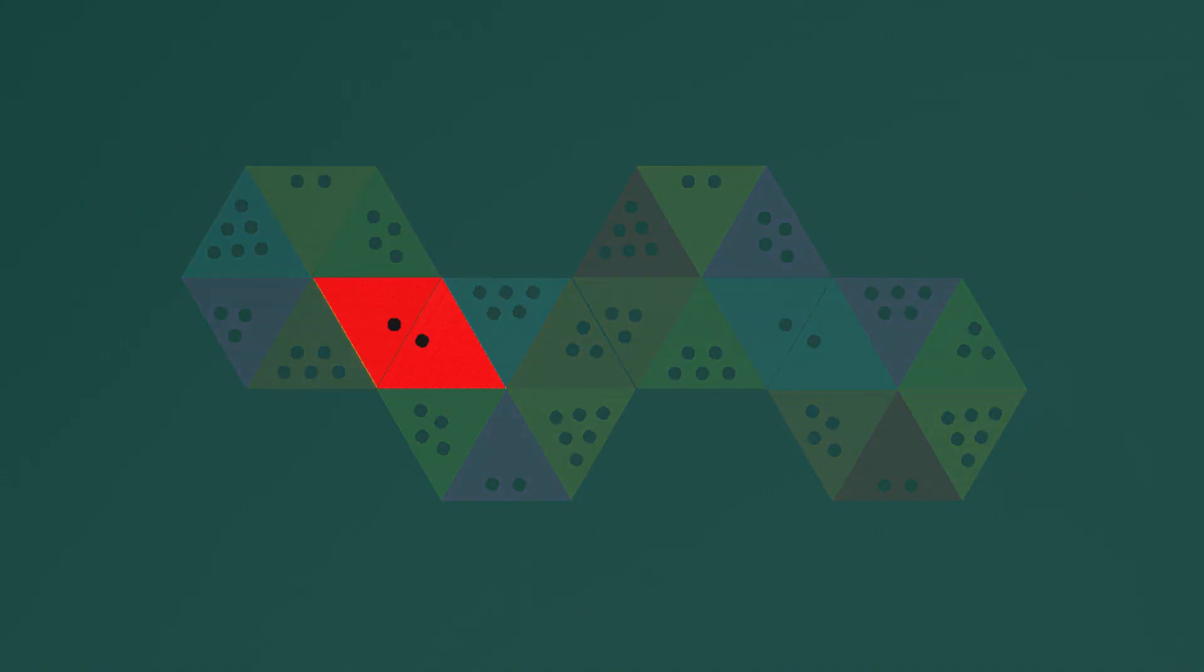For instance, red pairs with red and blue pairs with blue. Then, tally up the points on the sides that have been paired up.